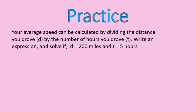Let's practice with writing expressions and then solving them. Your average speed can be calculated by dividing the distance you drove by the number of hours you drove. The distance will be called D for distance, and the number of hours will be T for time. We're going to write an expression and then solve it if I travel 200 miles in 5 hours. The expression is simply D divided by T.